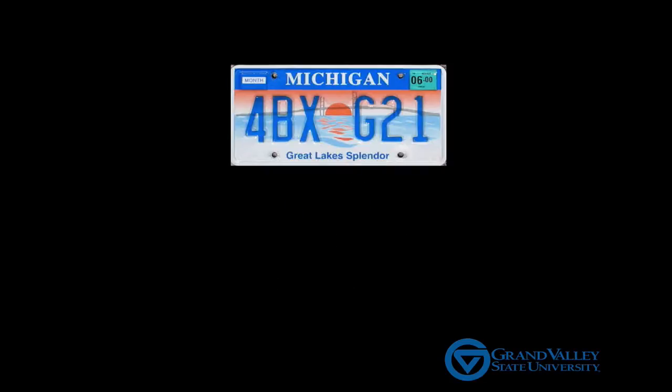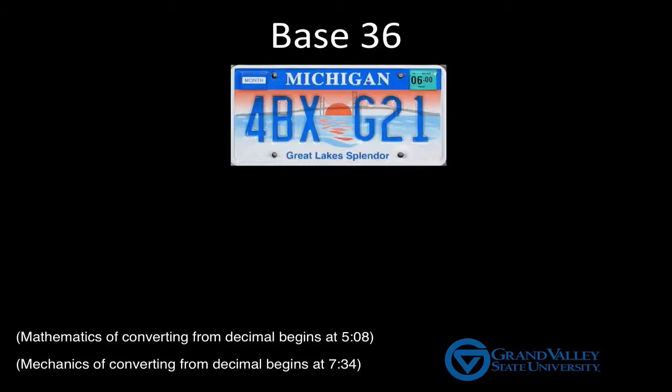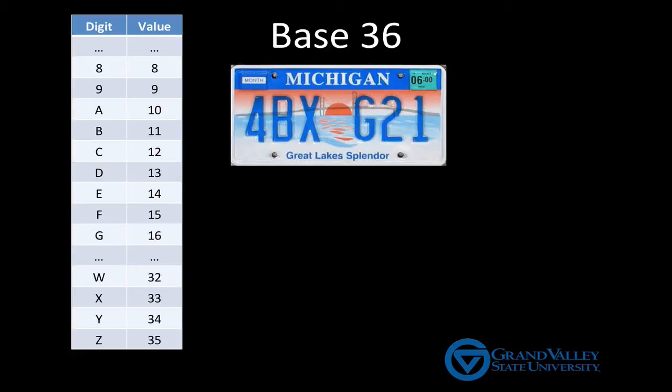You can think of a license plate as a base 36 number. Base 10 has 10 unique symbols, 0 through 9. For bases higher than 10, we need more symbols. We can use any symbols we like, but letters are the standard choice. For example, we let A represent a group of 10 and B represent a group of 11 and so on.